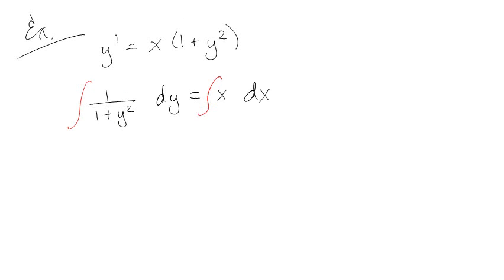Say we have something like y prime is equal to x times 1 plus y squared. This is great because it's separable. So I can put the 1 plus y squared over here, and I've got dy/dx. I already know I'm gonna move the dy to the other side, so I'm gonna start to move the dx to the other side.